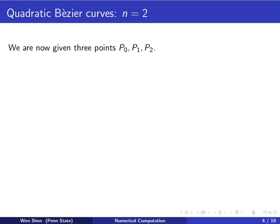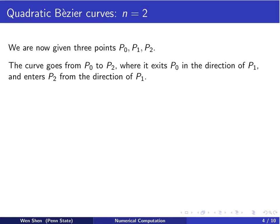We now consider three points: P0, P1, and P2. These curves are called quadratic Bézier curves.